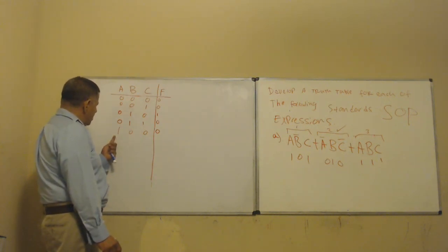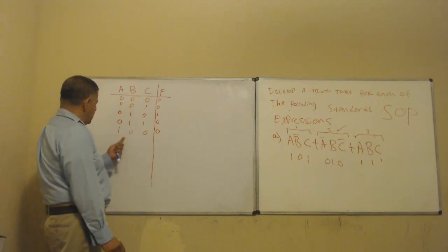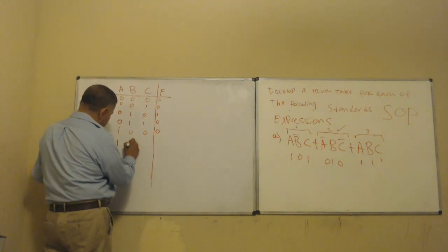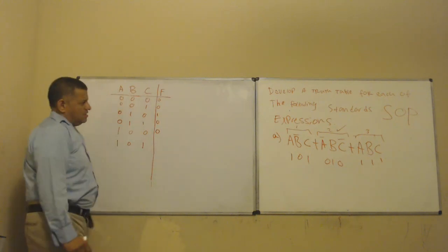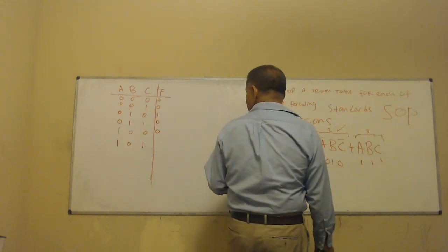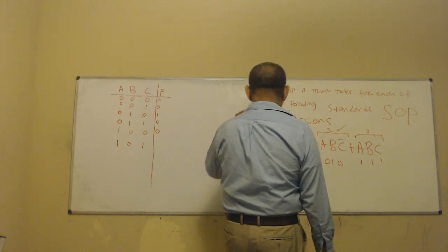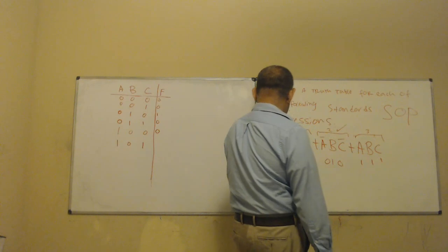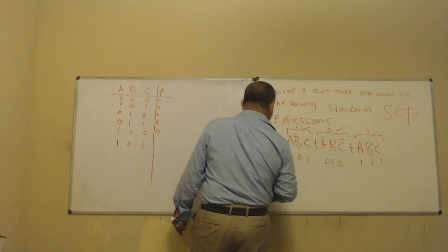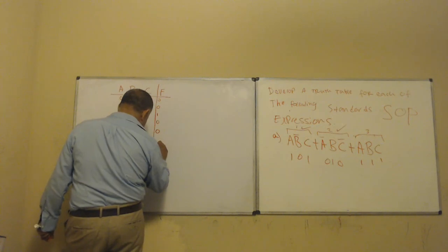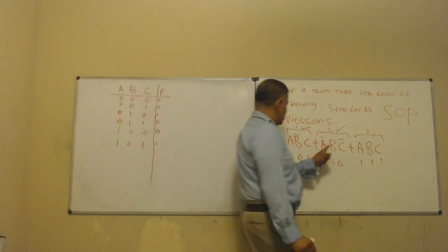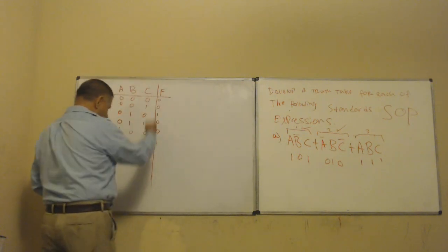Next row: one, zero, one. Do I have something like that? Yes — one, zero, one matches this term. So that is equal to one. Remember, we have three groups, so we should have at least three ones in the output.